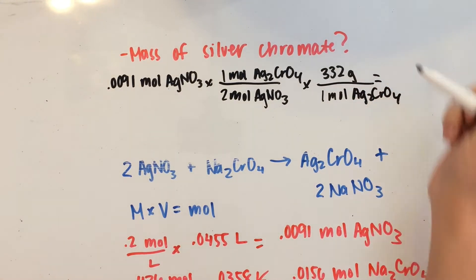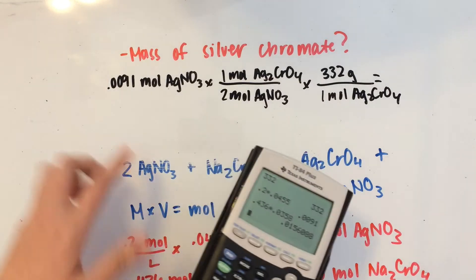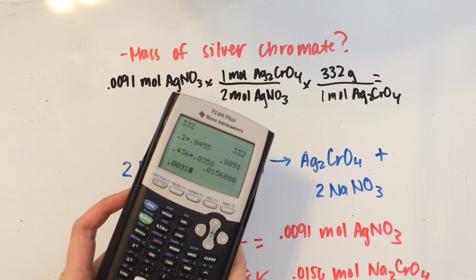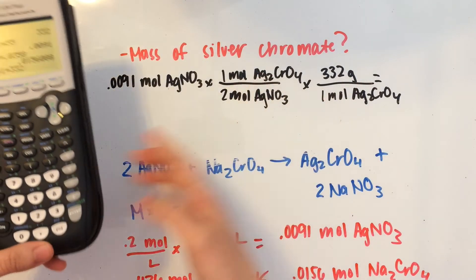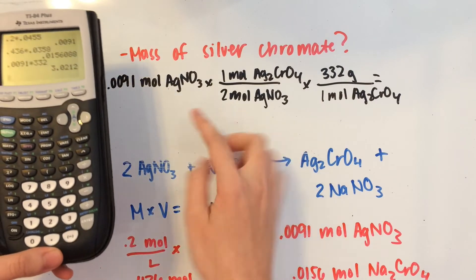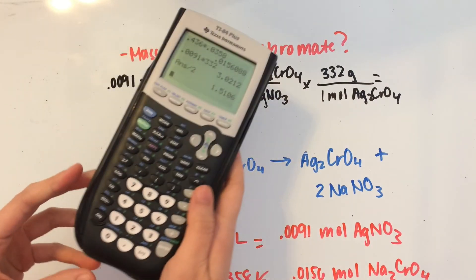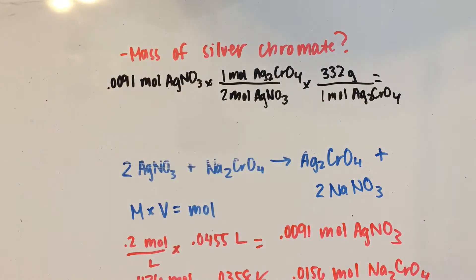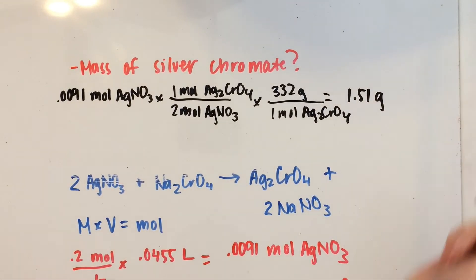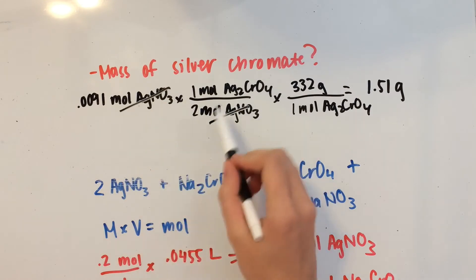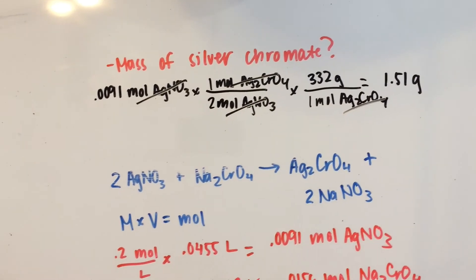And you could check that out on your periodic table if you need to check. So we have 0.0091 times 332 grams and then divided by 2, and that gives us 1.51 grams of Ag2CrO4. This cancels out, this cancels out, and we're left with grams.